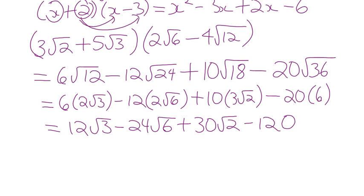That gives 12 root 3 minus 24 root 6 plus 30 root 2 minus 120. In this case there were four different products, no like terms that could be simplified, so we still have four different products. Sometimes it works out that way — you just get four. Express them as mixed radicals and you're done. Check your final answer: is there a perfect square in 3? No. In 6? No. In 2? No.